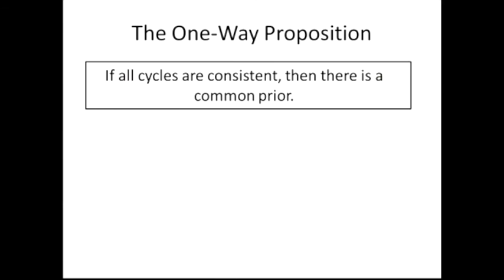Audience asks: if you're designing a system where people are aggregating their information, can you choose the initial partitions to avoid the problem? The speaker responds: it's not a question they've thought about deeply, but there is a minor result in that direction — if you have more links on the graph, you're more likely to have problems getting a common prior. So ideally you want people to have more refined information, which reduces the chance of there being problems. More links are bad; more refined information makes it less likely to have problems.